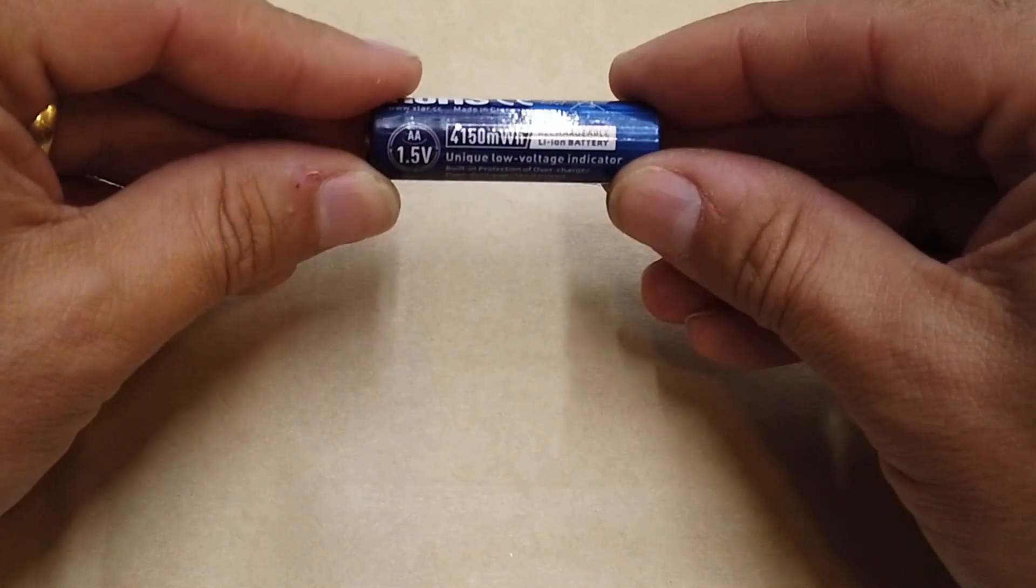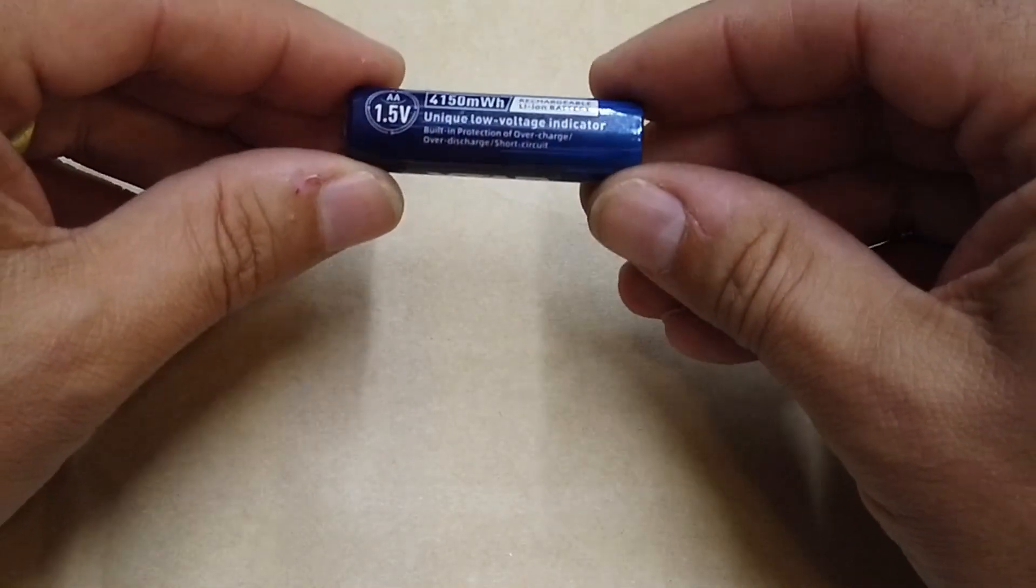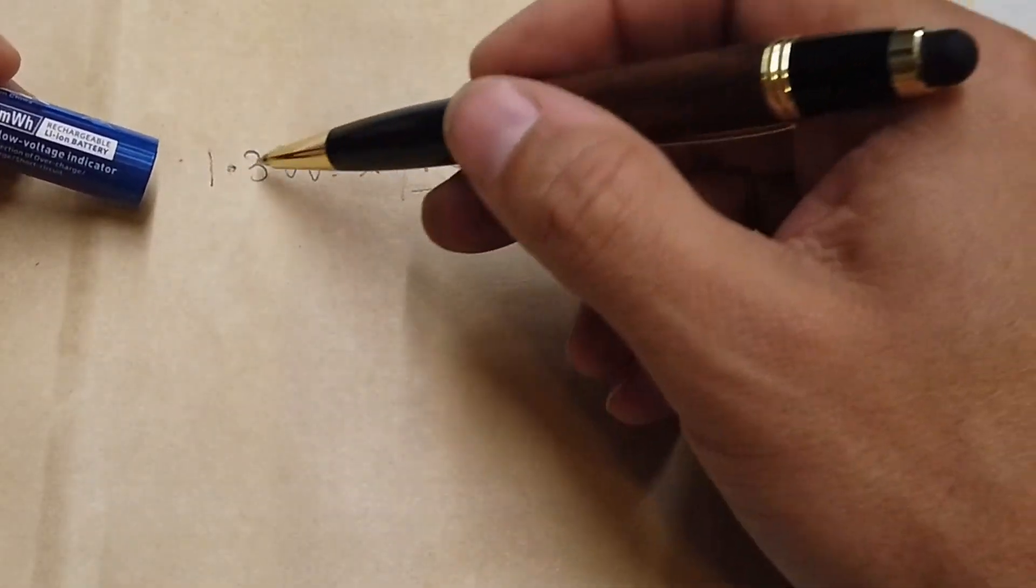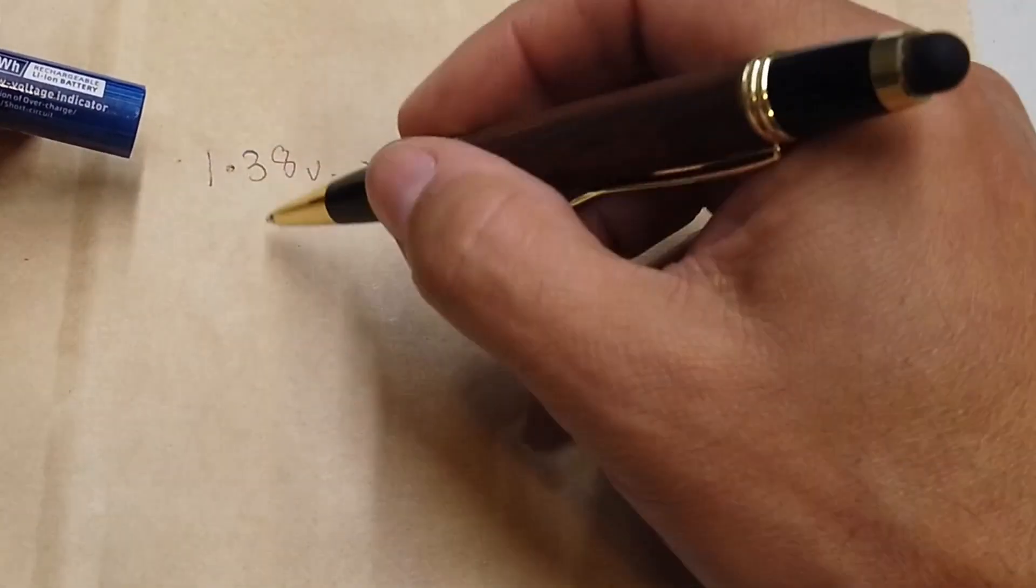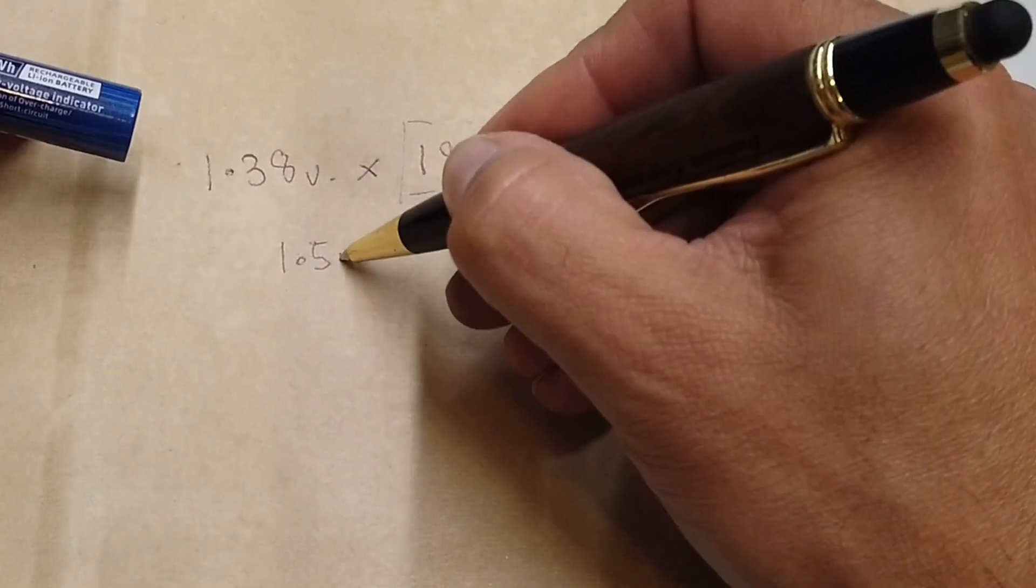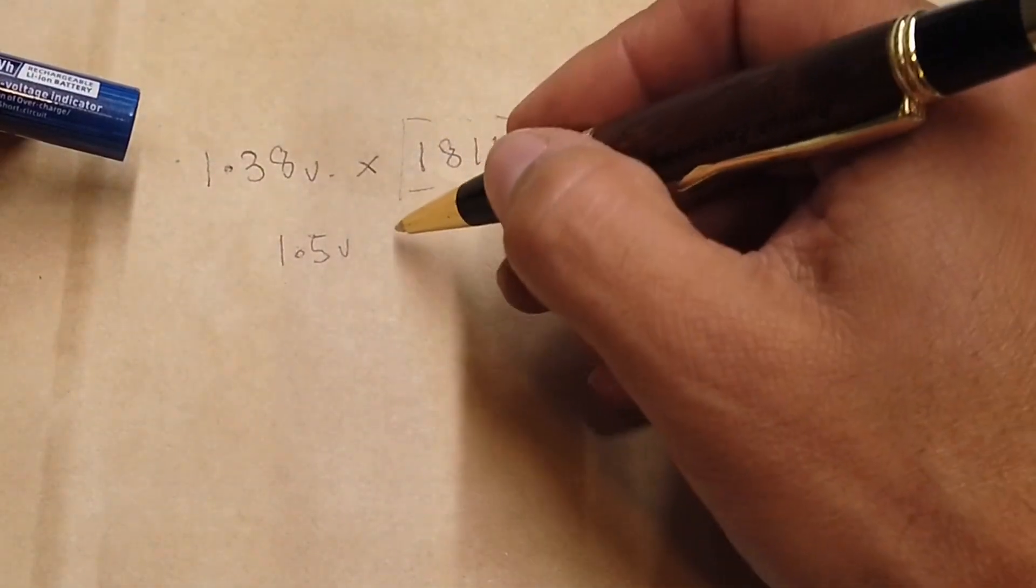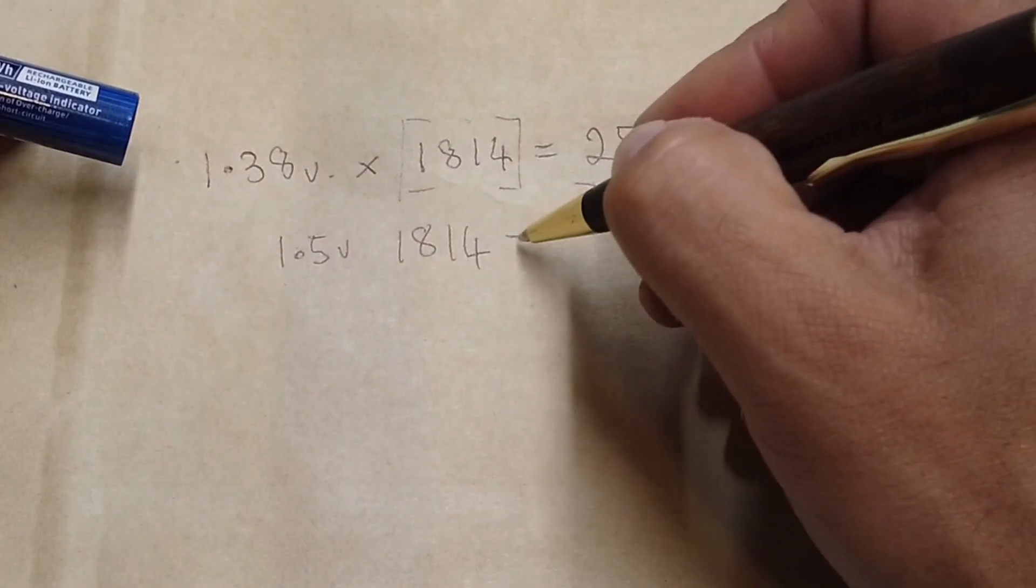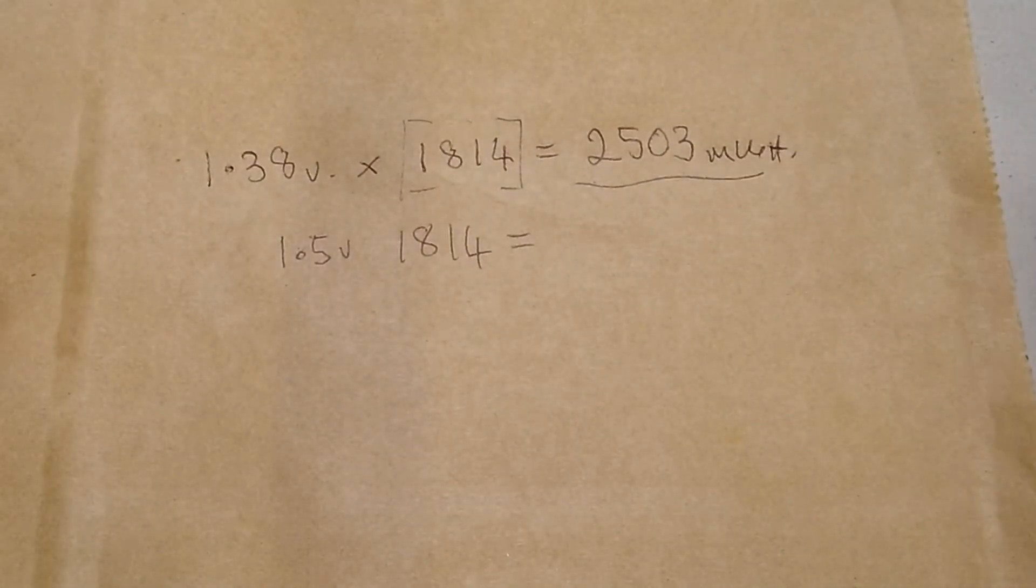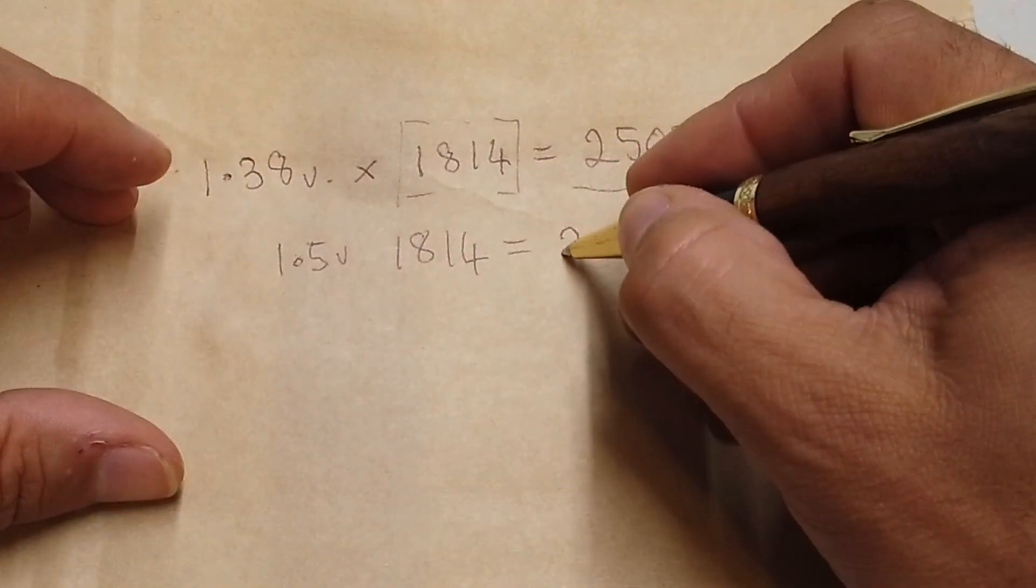Not quite the 4,150 milliwatt hours that the battery claims. If we were to remove perhaps some of the voltage drop through the cables and things like that, and let's say it was actually 1.5 volts at 1,814 milliamp hours, what do we get then? We get 2,721 milliwatt hours.